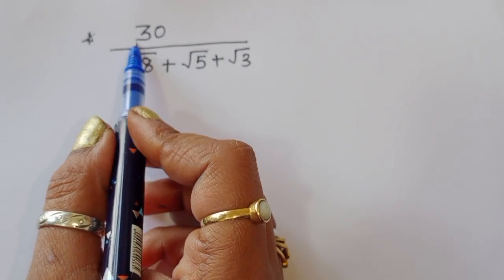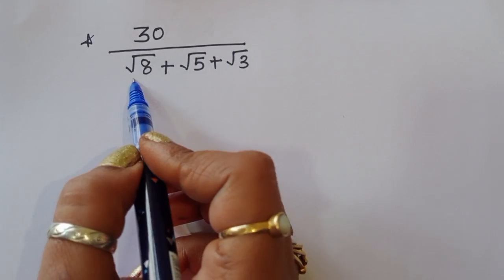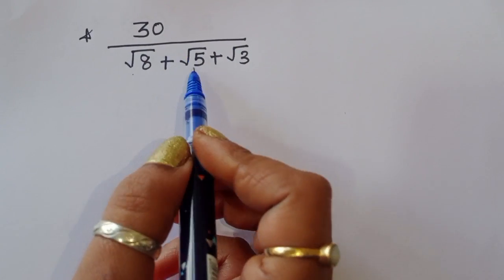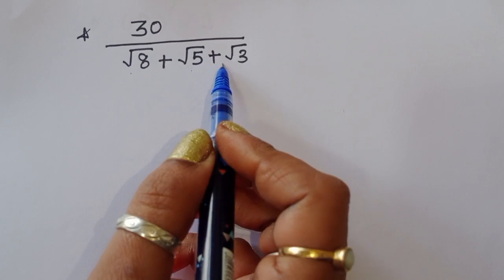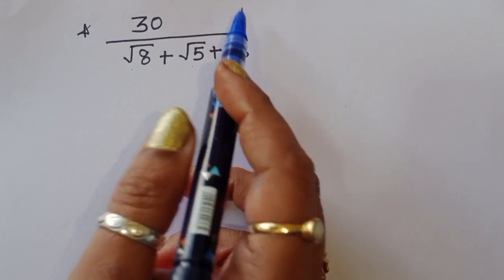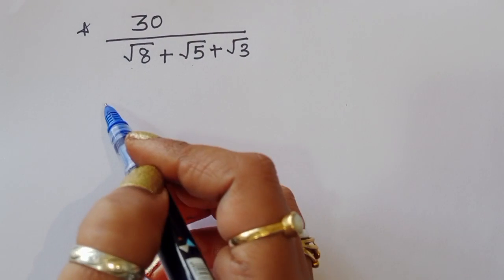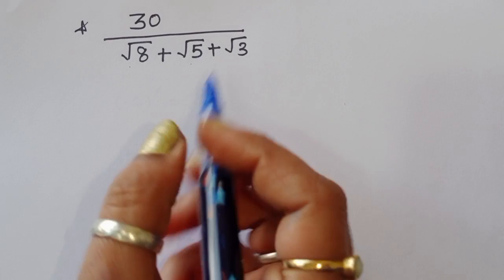The question is: find the value of 30 divided by (square root of 8 plus square root of 5 plus square root of 3). We have to find out the value of this sum. Let's see the solution.